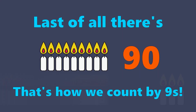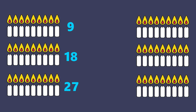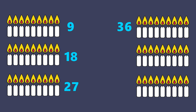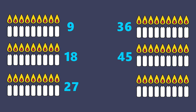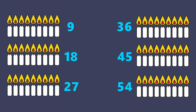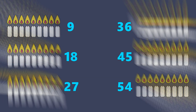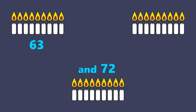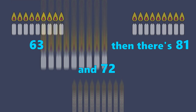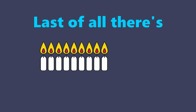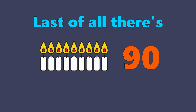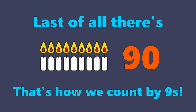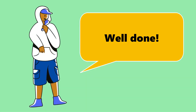Nine and eighteen, twenty-seven, thirty-six, forty-five and fifty-four, sixty-three and seventy-two, then that's eighty-one, and last of all, there's ninety. That's how we count by nines.